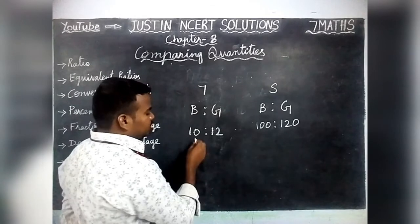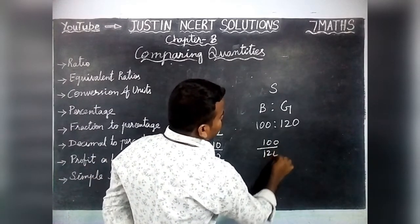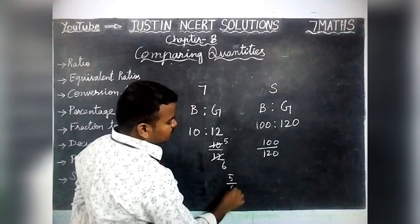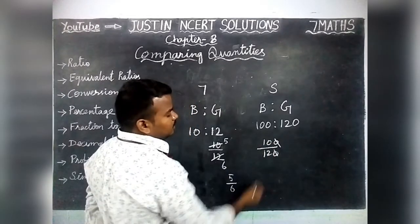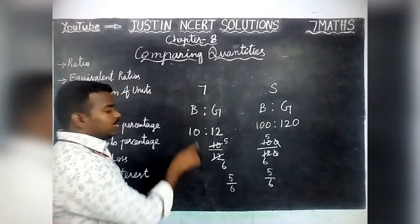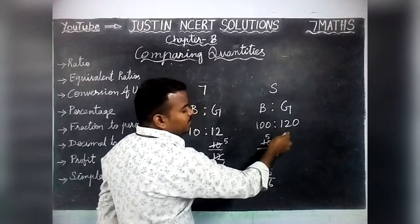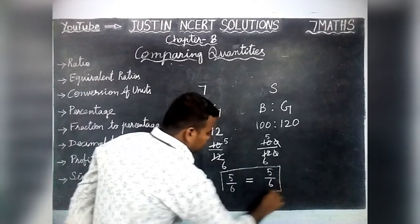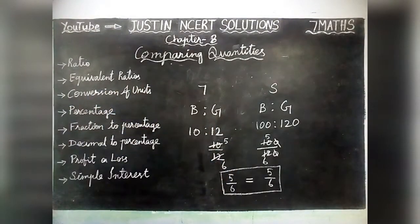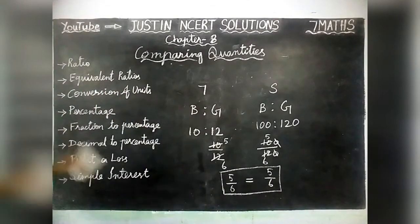Why are they called Equivalent Ratios? If we simplify, both will give the same answer. We simplify 10 divided by 12: 5 fours are 10, 6 fours are 12 — wait, 5 twos are 10, 6 twos are 12 — so we get 5 by 6. Next, 100 divided by 120: the zeros cancel and we simplify to 5 by 6. Ratios are equal. Therefore these two ratios are called Equivalent Ratios. The value is not exactly equal, but the ratio is equal.